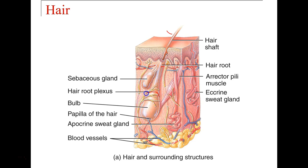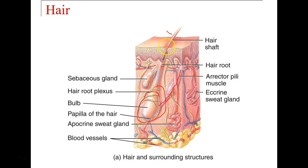We also have a bulb — this is the end, or shall we say the beginning, of the hair. Also attached to the hair follicle or root we see a small involuntary muscle, the erector pili muscle. This muscle is what causes the hair to stand on end, causing goosebumps. We also see a sebaceous gland, or oil gland, attached to each hair for maintaining health of the hair.